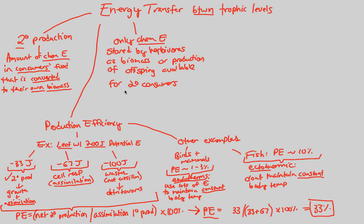So the secondary consumers can only take whatever is stored by the herbivores or the offspring that come as a result of those herbivores. That's essentially biomass as well, the offspring that eventually results based off of a healthy, viable individual.